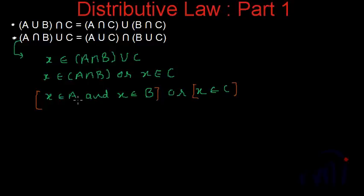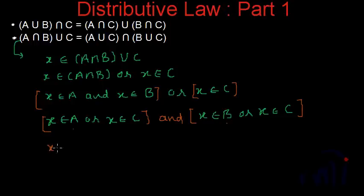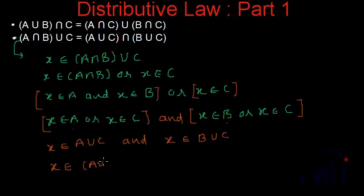If X is an element of A and X is an element of B, then we can say X is an element of A or X is an element of C, and X is an element of B or X is an element of C — both conditions will be true. Since X is in A intersection B, it will be in both A and B, and if it is in A and B, it will definitely be in their union with any other set. That means X will be in A union C and X will also be in B union C. Since X is in both A union C and B union C, X will definitely be in A union C intersection B union C.